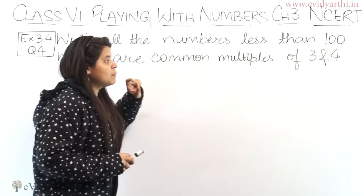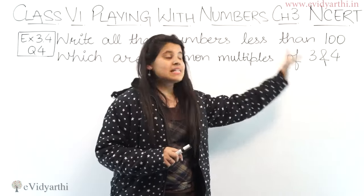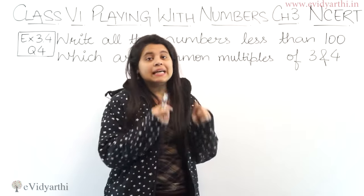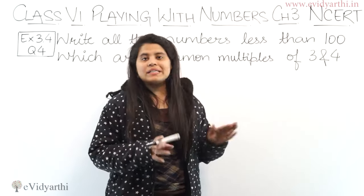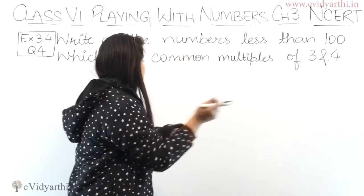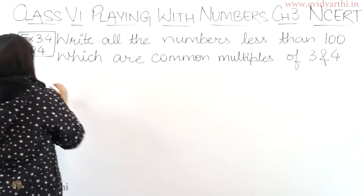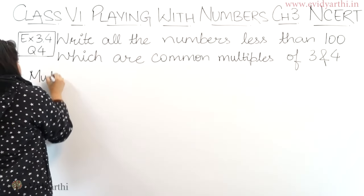Now for 3 and 4, first we have to write multiples of them and when we write multiples of them, then we have to write numbers less than 100. So let's start. Let's write down the multiples of 3.